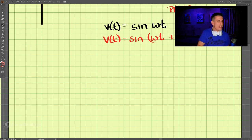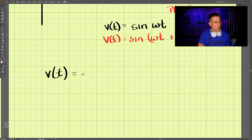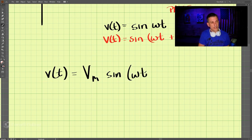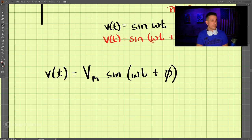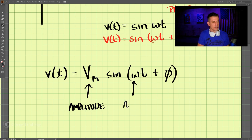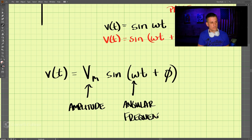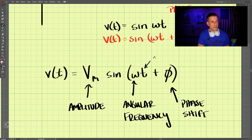We write our voltage as a function of time: v(t) = Vm·sin(ωt + φ). Here, Vm is the amplitude, ω is the angular frequency, φ is the phase shift, and t is time. These are all the components that make up a sinusoidal function.